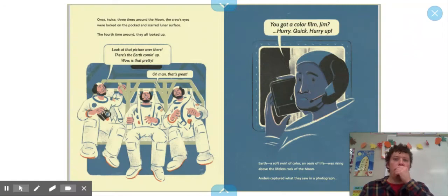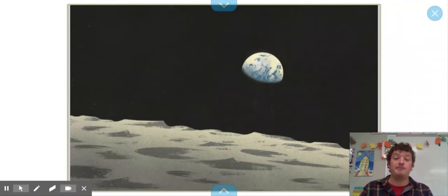Look at that picture over there. There's Earth coming up. Wow, that's pretty. Oh man, that's great. You got a color film? Hurry, Jim, hurry. Quick, hurry up. Earth, a soft swirl of color, an oasis of life, rising above the lifeless rock of the moon. And Anders captured what they saw in a photograph.